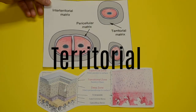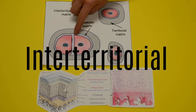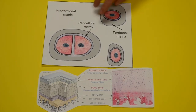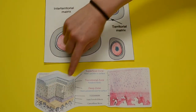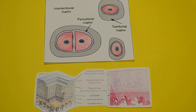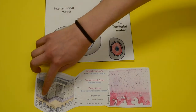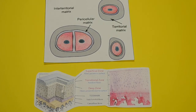Each of these zones have three regions: pericellular, territorial, and interterritorial. The superficial layer usually has a high number of flattened chondrocytes, and it plays a role of protection and maintenance for the deep layers of the articular cartilage, allowing the cartilage to resist compressive forces by articulation. In the middle zone, which makes up about 40 to 60 percent of the cartilage, the chondrocytes are spheres and are at a low density. In the deep zone, the chondrocytes are arranged in columns parallel to collagen fibers and perpendicular to the joint line.